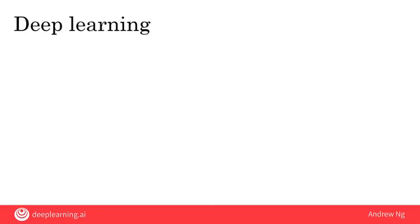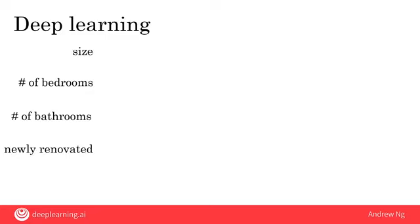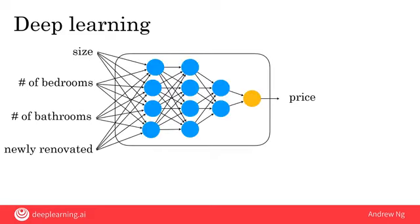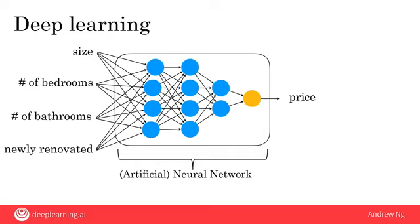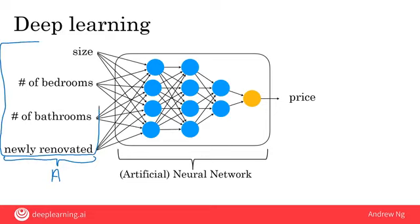You've also heard of deep learning — so what is it? Let's say you want to predict housing prices. You have an input with the size of the house, number of bedrooms, number of bathrooms, and whether it's newly renovated. One of the most effective ways to price houses given this input A is to feed it to a neural network — sometimes called an artificial neural network — in order to output the price B. The term 'artificial' distinguishes it from the biological neural network in your brain; this is a piece of software.